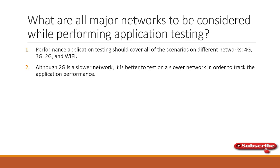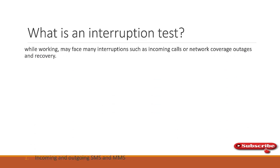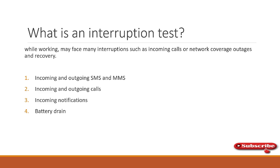What is interrupt testing? Interrupt testing is when you are performing some action on your mobile application and you receive incoming calls, SMS, or MMS. It also includes accessing notifications while testing, and battery drain testing — for example, monitoring whether a bank transaction completes or stops when the phone is about to run out of battery. Other interrupt scenarios include plugging the device into a PC for data transfer while simultaneously doing application testing and receiving incoming calls.